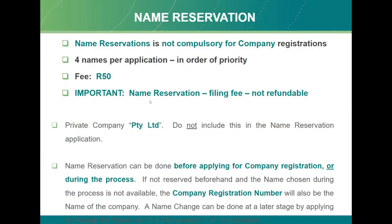When you reserve a name, don't include 'Pty Limited' for a private company, 'Ltd' for a public company, or 'co-op' - because at the end the 'Pty Limited' or relevant designation will be included in your registration certificate. CIPC knows and automatically adds it based on the type of company you indicate you want to register.